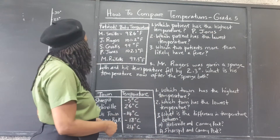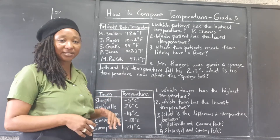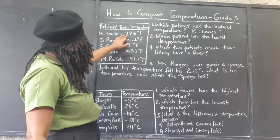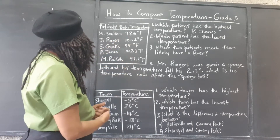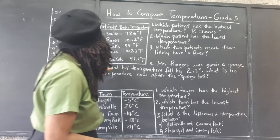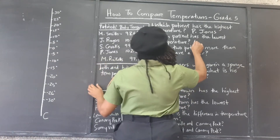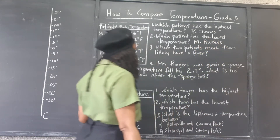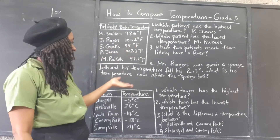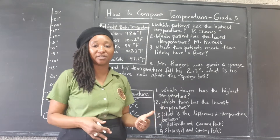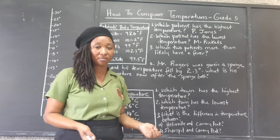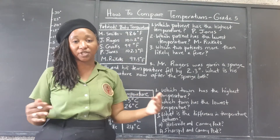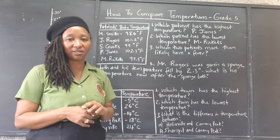Which patient has the lowest temperature? The lesser the number, the lower the temperature. That would be 97.5 degrees Fahrenheit, which is M. Ricketts. M. Ricketts has the lowest temperature, still within a reasonable range. Remember 98.6 is the average normal, but there's a range a little below and a little above that is still considered normal.